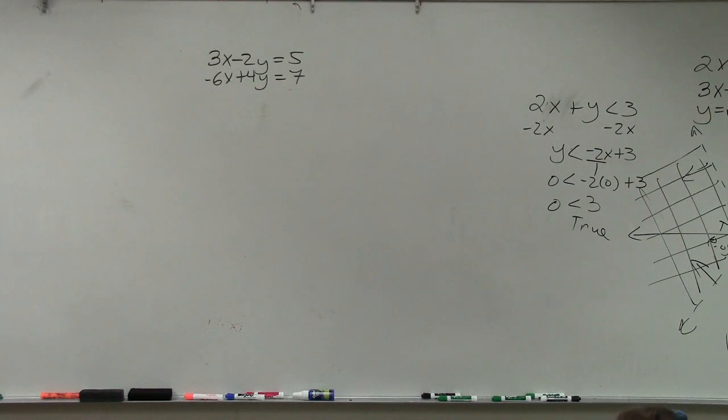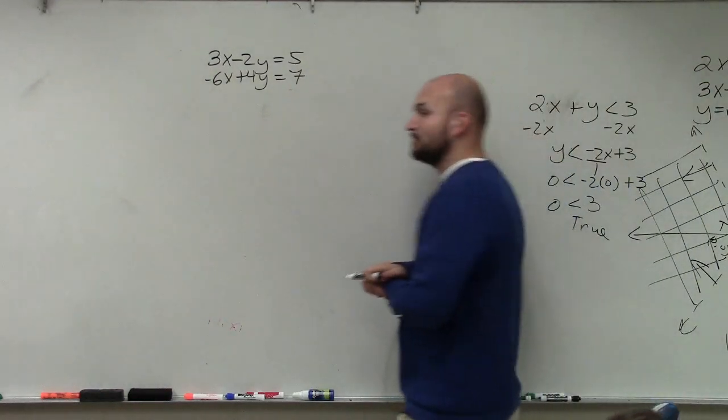All right. So now, ladies and gentlemen, let's go and take a look at the equation 3x minus 2y equals 5, and negative 6x plus 4y equals 7.